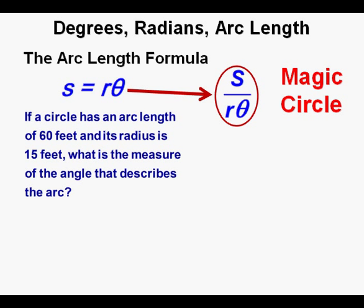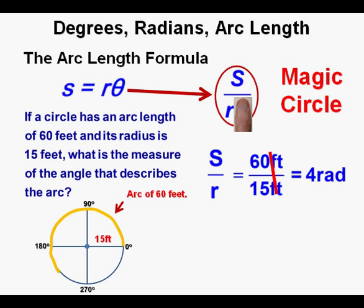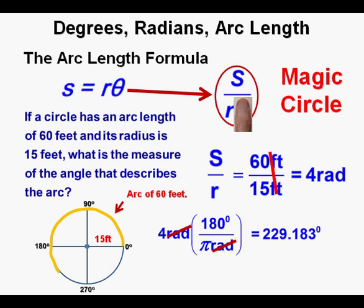Next problem: a circle has an arc length of 60 feet and a radius of 15 feet — what is the angle that describes the arc? We draw a sketch, then cover theta in the magic circle, leaving s divided by r: 60 feet divided by 15 feet. Feet cancel, giving an angle of 4 radians. Since pi radians is 180 degrees, 4 radians being greater than pi means the angle is over 180 degrees. Converting: 4 radians times 180 degrees over pi equals approximately 229.183 degrees.